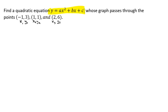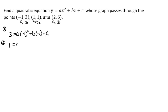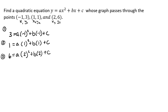Now we're going to set up three equations using those values and plug them into our quadratic equation — x goes where x is, and y goes where y is. For our first equation we're going to have three equals a times negative one quantity squared plus b times negative one plus c. For our second equation we're going to have one equals a times one quantity squared plus b times one plus c. For our third equation we're going to have six equals a times two squared plus b times two plus c.